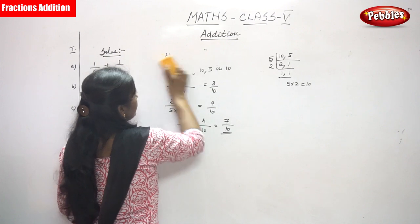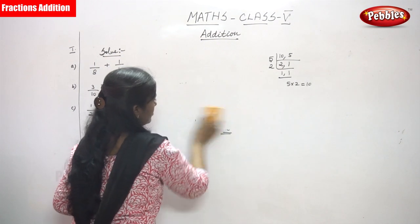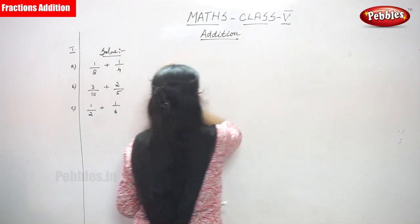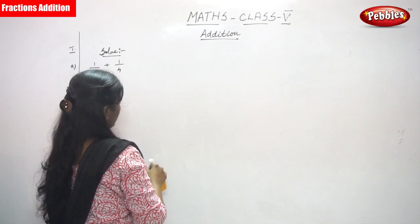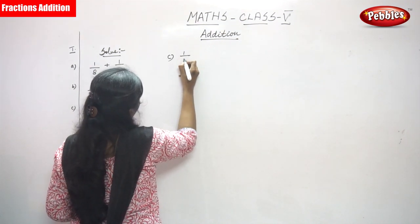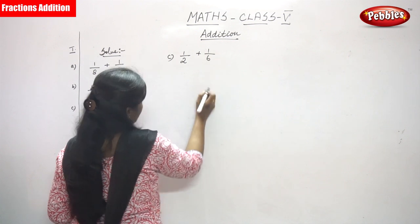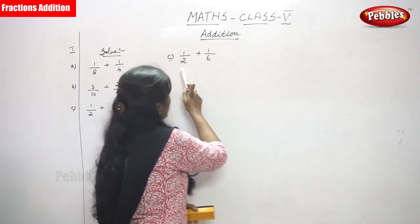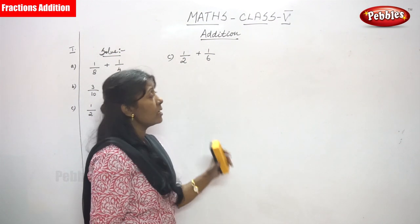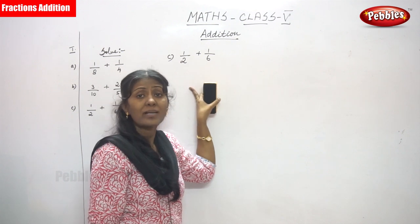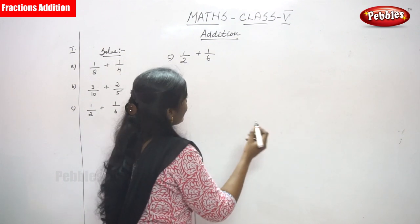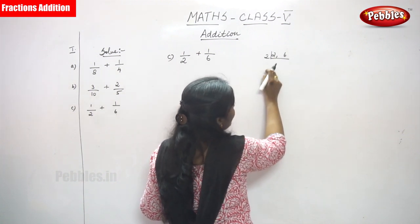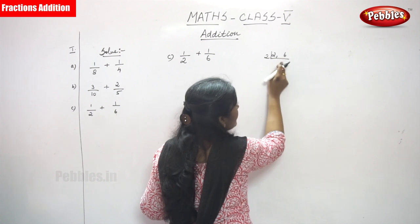The next sum is 1 by 2 plus 1 by 6. Look at the denominators — the first one is 2 and the next one is 6. If the denominators are different, you have to take LCM. The common divisor for 2 and 6 is 2.